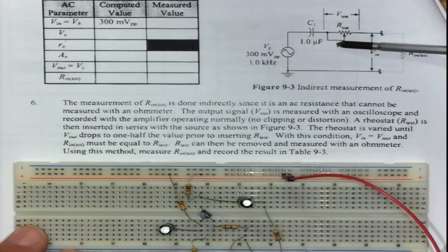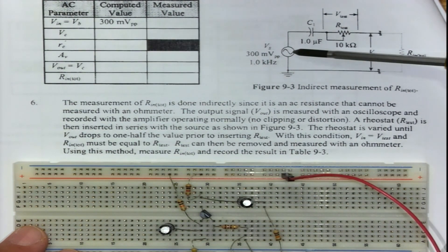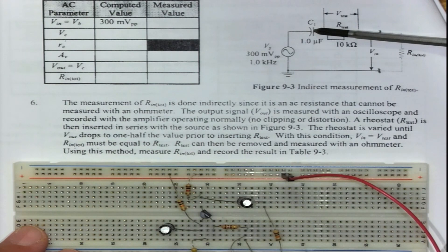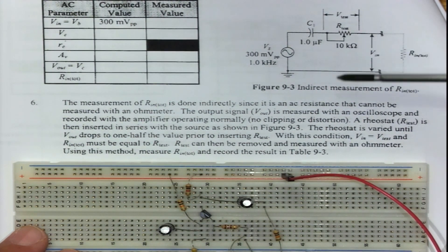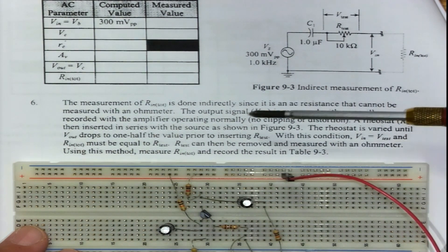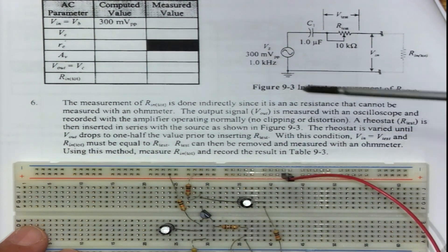The rheostat or test resistor is then inserted in series with the source circuit, and that's what we are doing here. We have the signal generator C1, after that before we go to the base we install a variable resistor, and that is shown here in Figure 9-3.